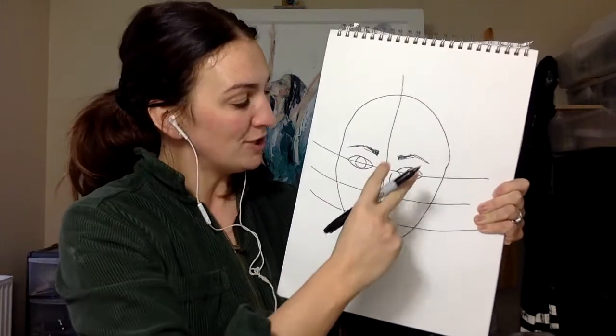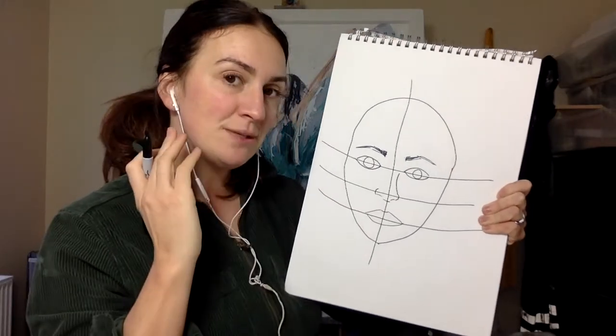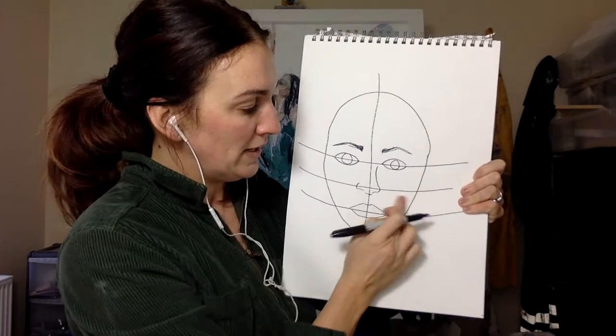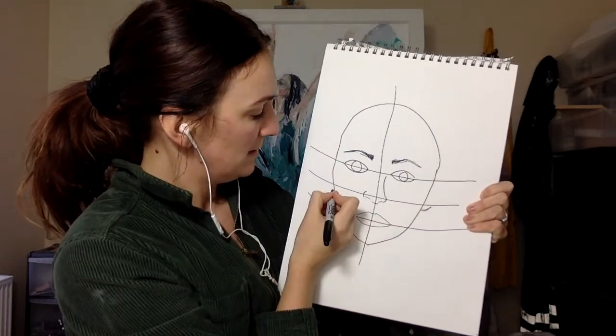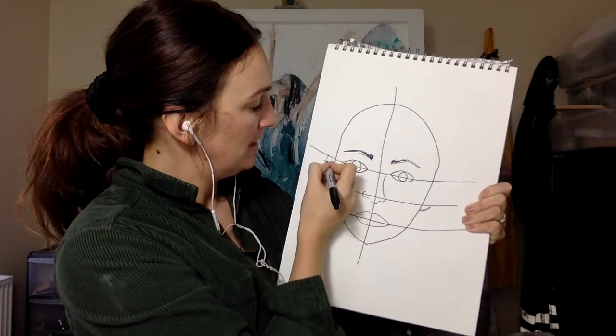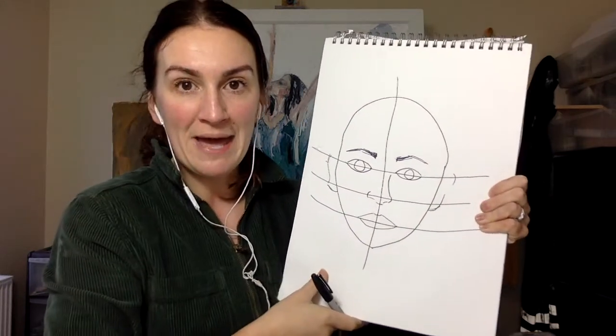So there we go that's our eyebrows, eyes, nose and mouth. Now for our ears as well. So where I like to place the ears is always just between the bottom two lines so this is just where the ear lobe is here and the same on the other side and then you can bring that up, you can make those as obvious as you want but I'm going to put some hair in here.